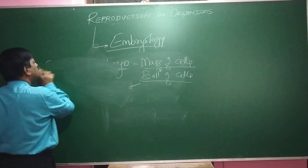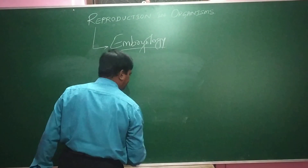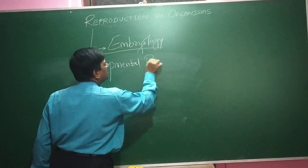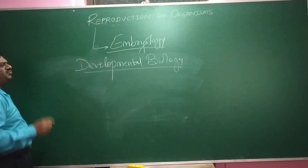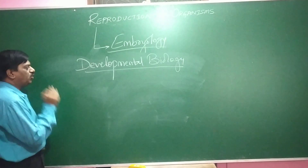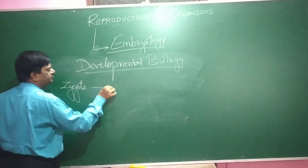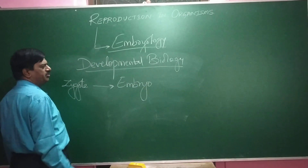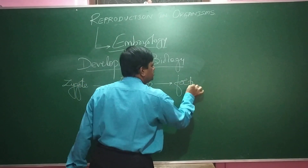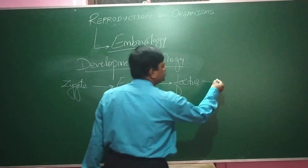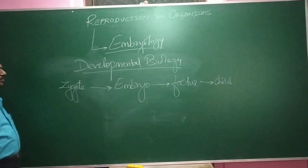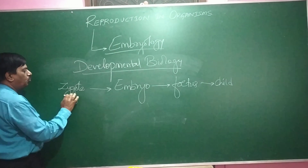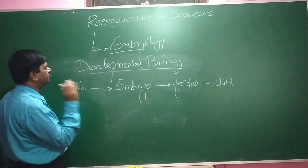Now we will see what is developmental biology. The development involves a zygote being converted to an embryo, and the embryo undergoes further development. After delivery, we use the word 'child.' These developmental stages are called developmental biology — how a zygote and embryo form one after the other.